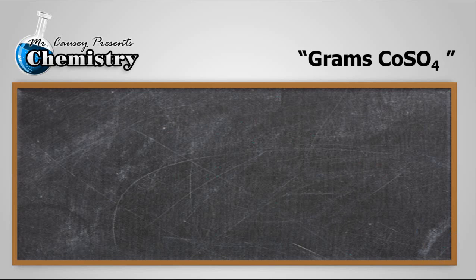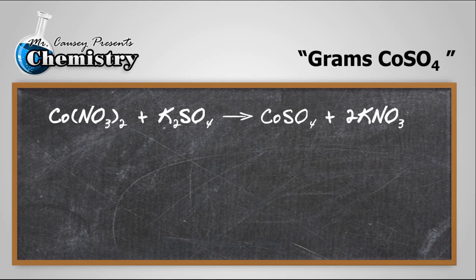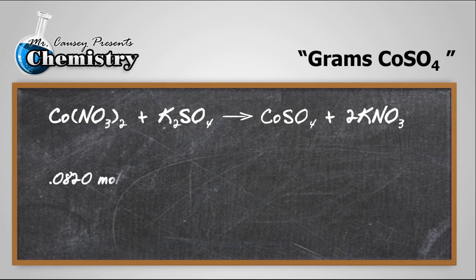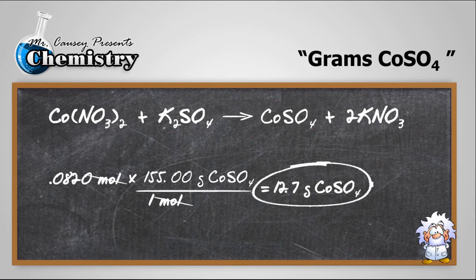Alright, let's find the grams of the products. First, cobalt 2 sulfate. We know that cobalt 2 nitrate was the limiting reactant, and we had 0.0820 moles of it. The mole ratio of the cobalt 2 nitrate to cobalt 2 sulfate was a 1 to 1 ratio. Therefore, we can only have 0.0820 moles of cobalt 2 sulfate produced. Take that and multiply it to its molar mass, and that will give us grams. Plug and chug. We get 12.7 grams of cobalt 2 sulfate, and I'm using 3 sig figs.